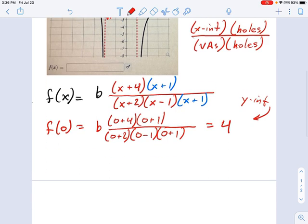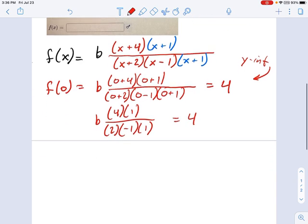So let's go ahead and solve this equation and figure out what b is. So this is b times 4 times 1, divided by 2, negative 1, and 1. Okay. Simplify that a little bit more.